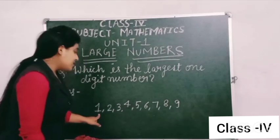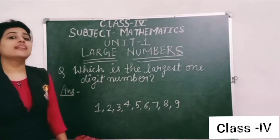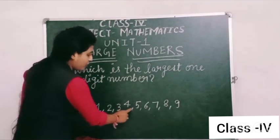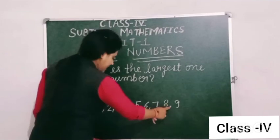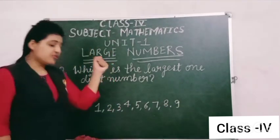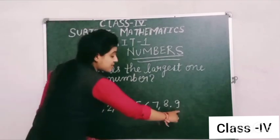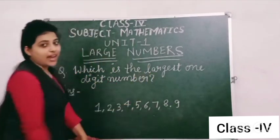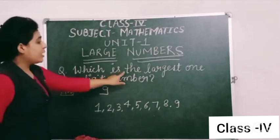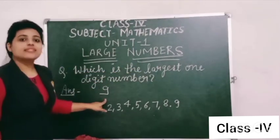One-digit numbers are from 1 to 9: 1, 2, 3, 4, 5, 6, 7, 8 and 9. And the largest number here is 9. So the largest one-digit number is 9.